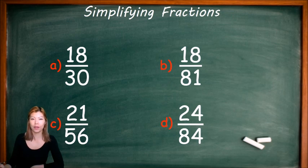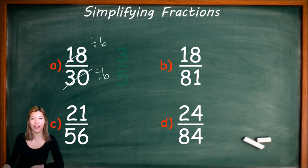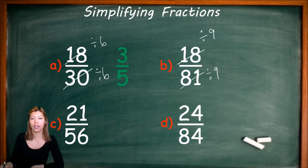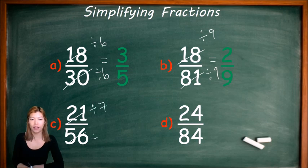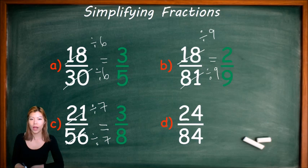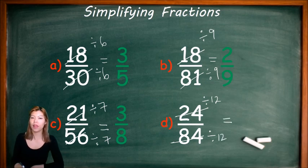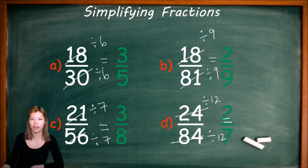Have a go at these questions — pause the video and look at the answers in a second. 18 over 30: the highest common factor is 6, so divide top and bottom by 6 to get 3 over 5. 18 and 81 are both divisible by 9: 18 divided by 9 is 2, 81 divided by 9 is 9. 21 and 56 are both divisible by 7: divide top by 7 and bottom by 7 to get 3 over 8. 24 and 84: divide top and bottom by 12 — the highest common factor — to get 2 over 7. Remember, if you can't think of that, you can divide by 2 and keep going until you can't find any more numbers that fit.